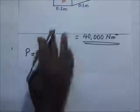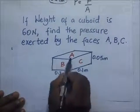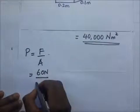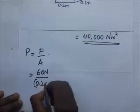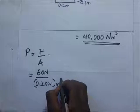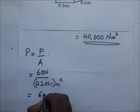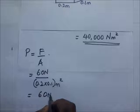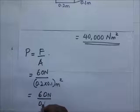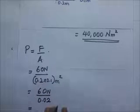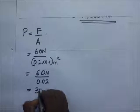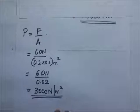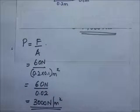Divide that by the surface area. Face A has dimensions of 0.2 times 0.1, so the surface area is 0.2 × 0.1 = 0.02 meters squared. So it's going to be 60 newtons divided by 0.02, and our answer is 3,000 newtons per meter squared. That is the pressure of face A.